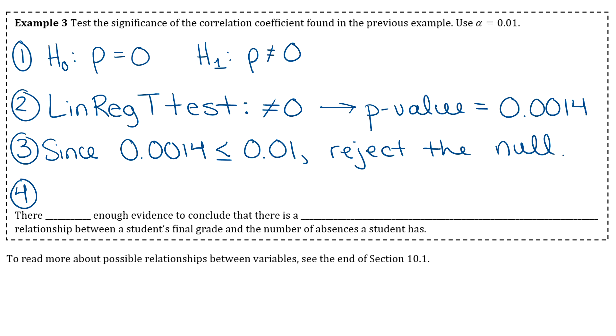When we state our answer, we do want to be specific with it. So we'll say that there is enough evidence to conclude that there is a significant, negative, linear relationship between a student's final grade and the number of absences that a student has.